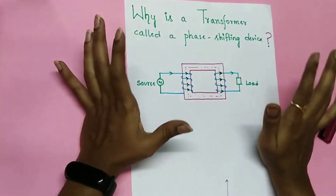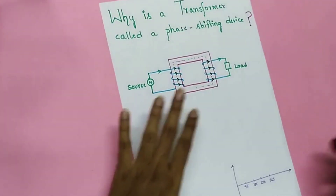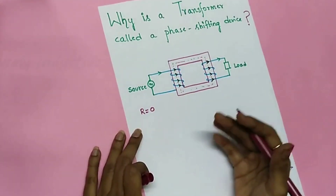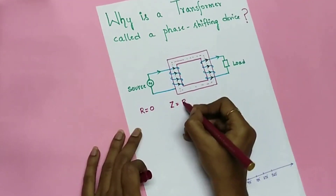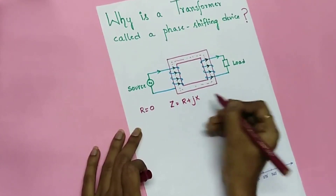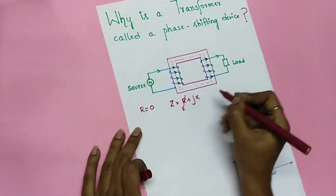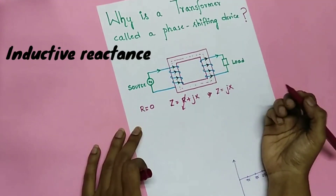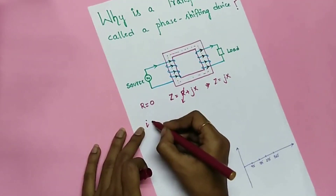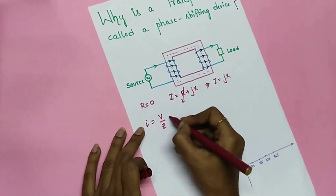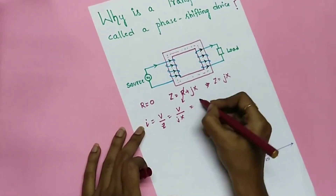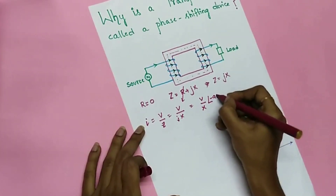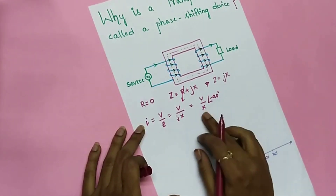Let us consider an ideal transformer. An ideal transformer means resistance equals zero — it is a purely inductive circuit. The impedance Z equals R plus jX, but since R equals zero, Z equals only inductive reactance. We know that I equals V divided by Z, that is V divided by jX.